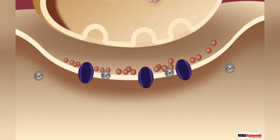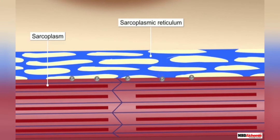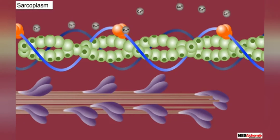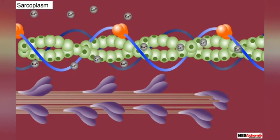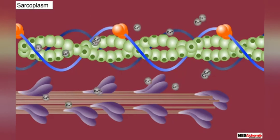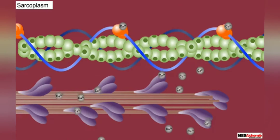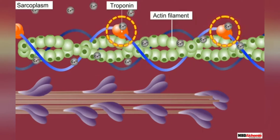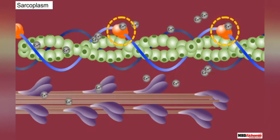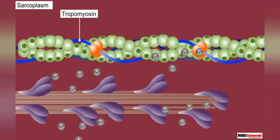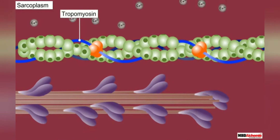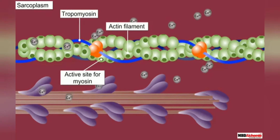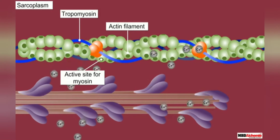These calcium ions interact with troponin molecules. This interaction inactivates the troponin-tropomyosin complex and leads to a change in the structure of tropomyosin. Due to this, tropomyosin gets detached from the active site of the actin filament — thus the active site becomes uncovered, or de-masking takes place.